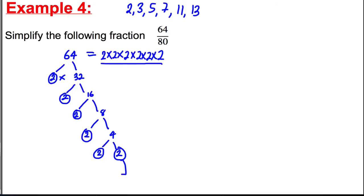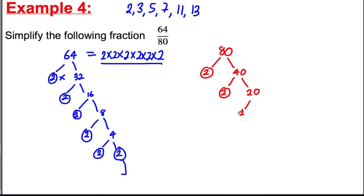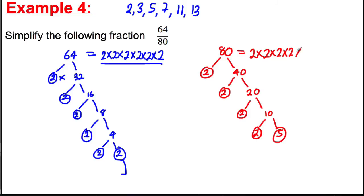Now for 80: does 2 go into it? Yes, 40 times. Does 2 go into 40? Yes, 20 times. Does 2 go into 20? Yes, 10 times. Does 2 go into 10? Yes, 5 times. And 5 is one of our primes, so we circle it. So 80 is 2 times 2 times 2 times 2 times 5.